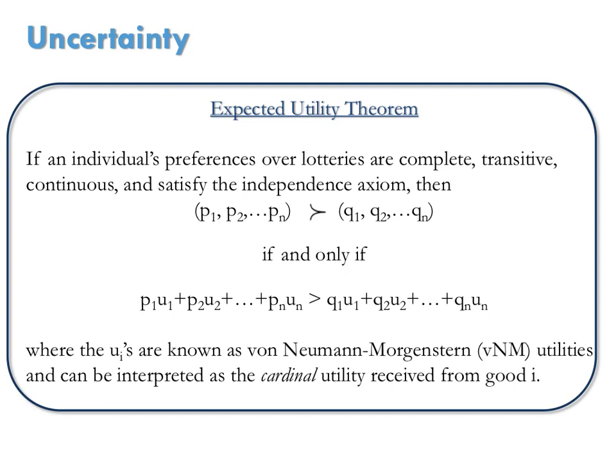Now, the expected utility theorem has to have certain assumptions satisfied. I'm not going to worry a lot about what these assumptions look like. But again, there are certain assumptions that have to be satisfied. But when they are, this says, make decisions when faced with uncertainty by choosing the option with the higher expected utility.